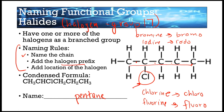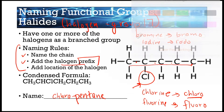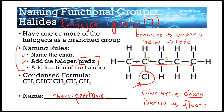Since we have chlorine, we use chloro, so we get chloropentane. Just like with branches, double bonds, and triple bonds, we have to give the location of that halogen — and we want to use the smallest number. Labeling our carbons 1, 2, 3, 4, 5, we can see this is on carbon number 2, so it's 2-chloropentane. You can also write this as a condensed formula.